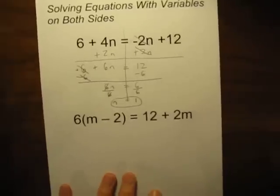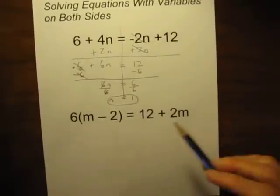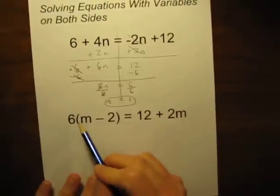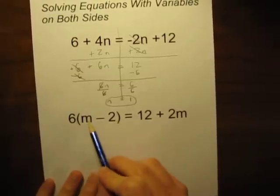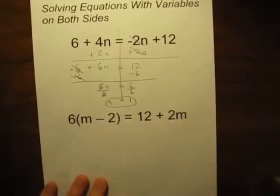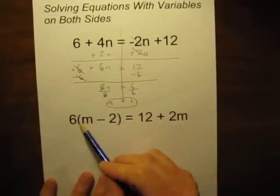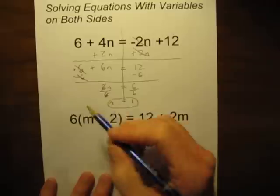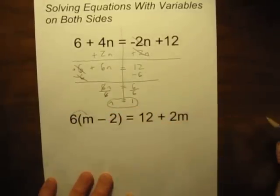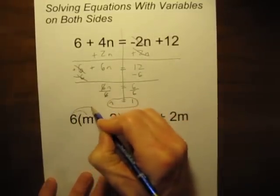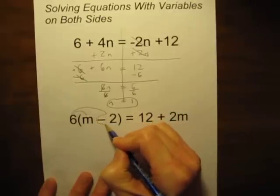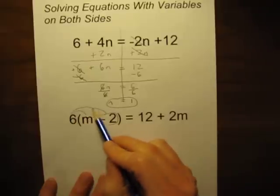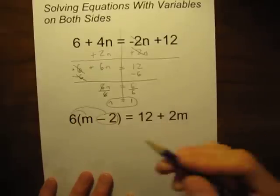The second problem. m is on both sides. We want to solve for m. But there's a little extra bonus here. We have to do a little distributing first. We need to get rid of those parentheses. Remember what the parentheses mean. This means 6 times everything inside the parentheses. So we're going to be doing 6 times m and 6 times negative 2. Don't forget that negative sign has to go with that 2. So let's do that right away.